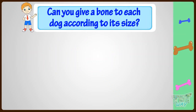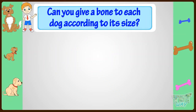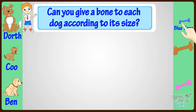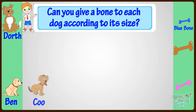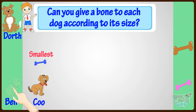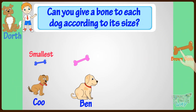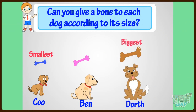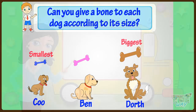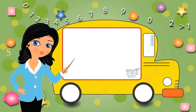Can you give a bone to each dog according to its size? Coo will get the blue bone as he is the smallest and should get the smallest bone. Ben will get the pink bone. Dorth will get the brown bone as he is the biggest and will get the biggest bone. Good! Now you may go ahead and take a quiz to learn more. Bye-bye!